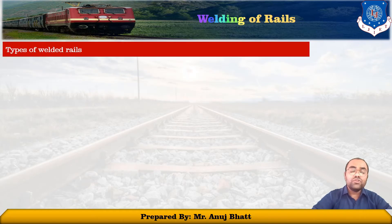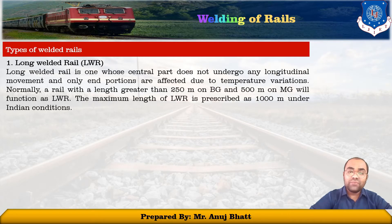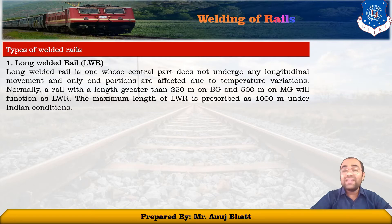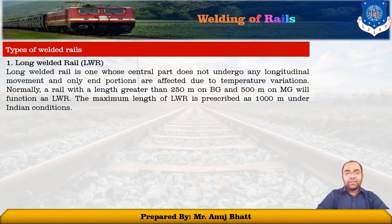What type of welds do we use on the rails? In the present scenario in Indian Railway, we provide long welded rail, short welded rail, and continuous welded rails. The first is the long welded rail. A long welded rail is one whose central part does not undergo any longitudinal movement and only end portions are affected due to the temperature variation. Normally, a rail with a length greater than 250 meters on the broad gauge and 500 meters on the meter gauge will function as a long welded rail. The maximum length of long welded rail is prescribed as 1000 meters under Indian conditions.